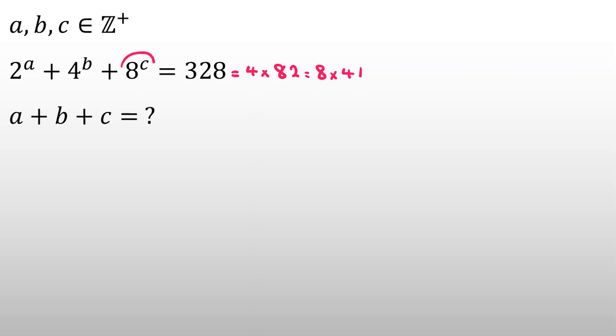Now, we know it is a multiple of 8. Since 8 to the C is a multiple of 8, we conclude 2 to the A plus 4 to the B is also a multiple of 8.